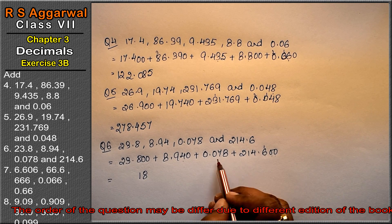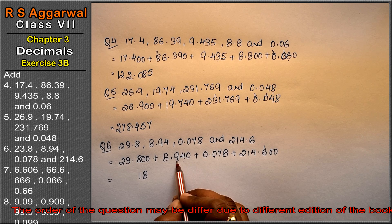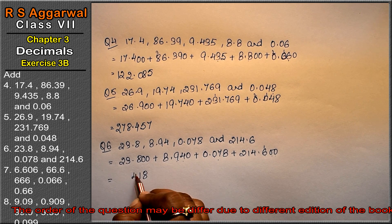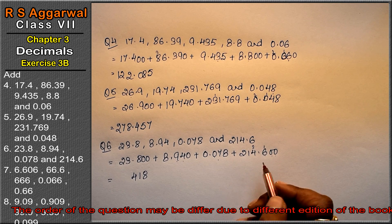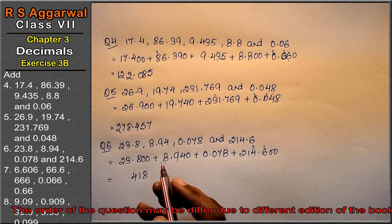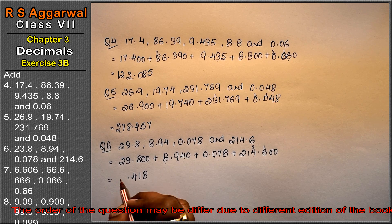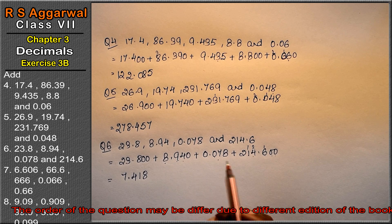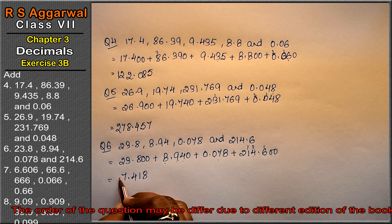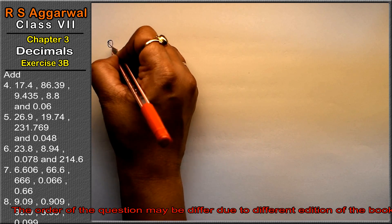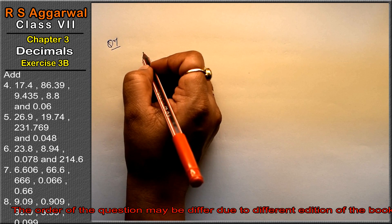7 and 9 is 16; 16 and 8 is 24, write 4, carry 2. 6 and 8 is 14, 15, 16, 17, carry 1. 2 and 2 is 4; and 2 is the answer.